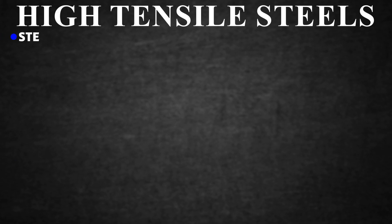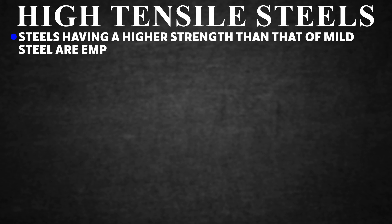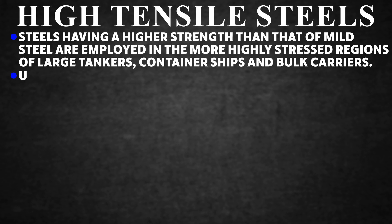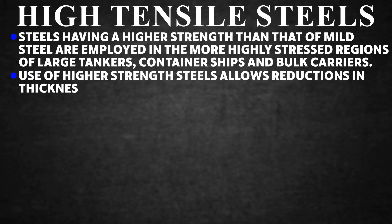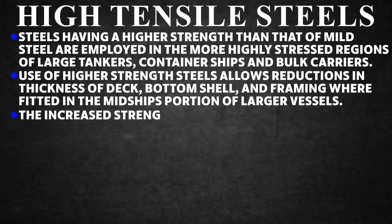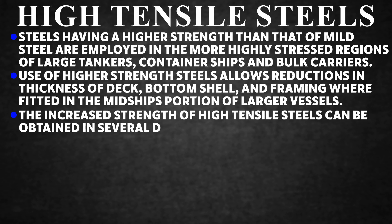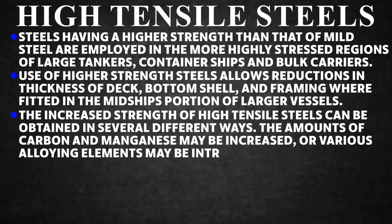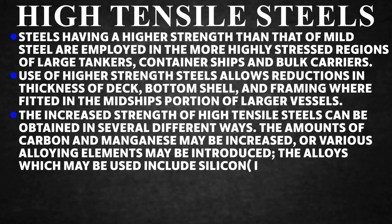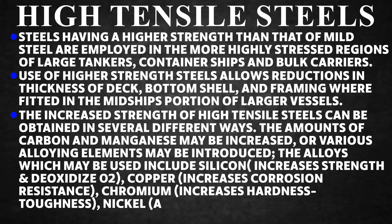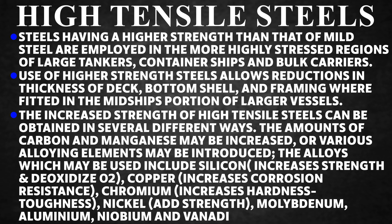High-Tensile Steels. Steels having higher strength than mild steel are employed in the more highly stressed regions of large tankers, container ships, and bulk carriers. Use of higher-strength steels allows reductions in thickness of deck, bottom shell, and framing in the midship portion of larger vessels. The increased strength can be obtained by increasing carbon and manganese content, or by introducing alloying elements: silicon (increases strength and deoxidizes), copper (increases corrosion resistance), chromium (increases hardness and stiffness), nickel (adds strength), molybdenum, aluminium, niobium, and vanadium.